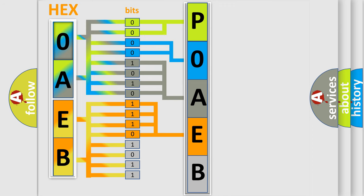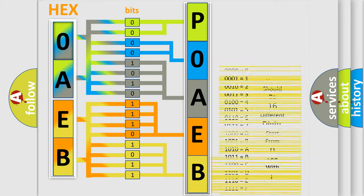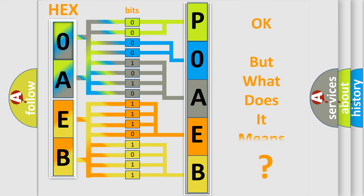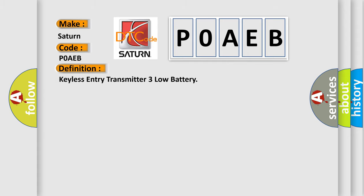A single byte conceals 256 possible combinations. We now know in what way the diagnostic tool translates the received information into a more comprehensible format. The number itself does not make sense to us if we cannot assign information about what it actually expresses. So, what does the diagnostic trouble code P0AEB interpret specifically for SAT and car manufacturers? The basic definition is: keyless entry transmitter three, low battery.